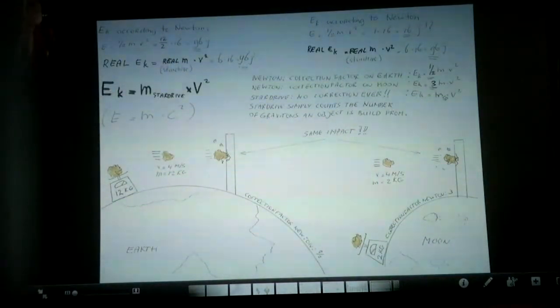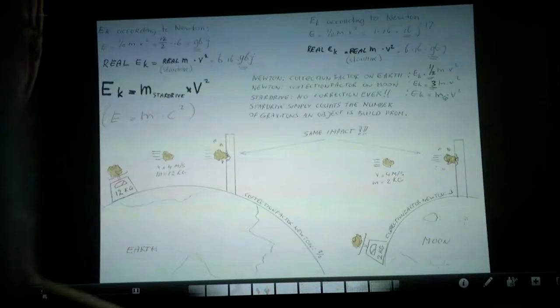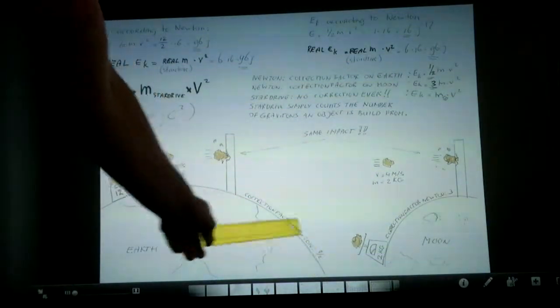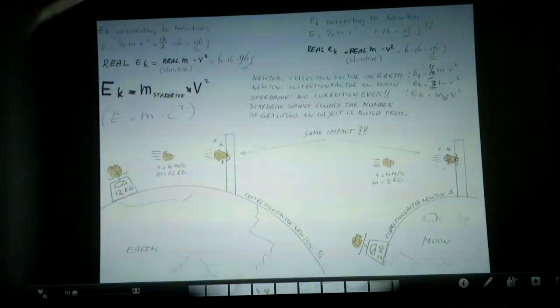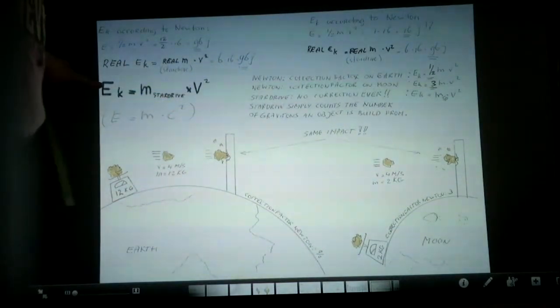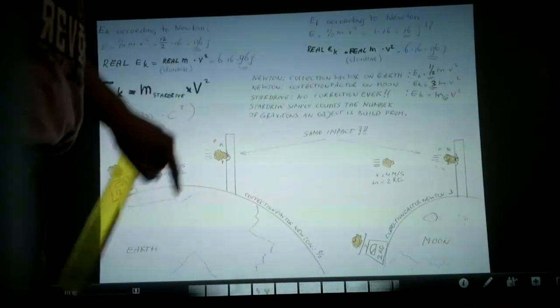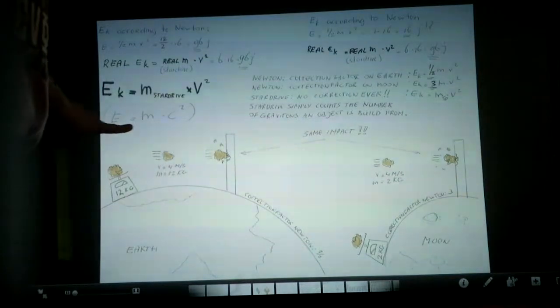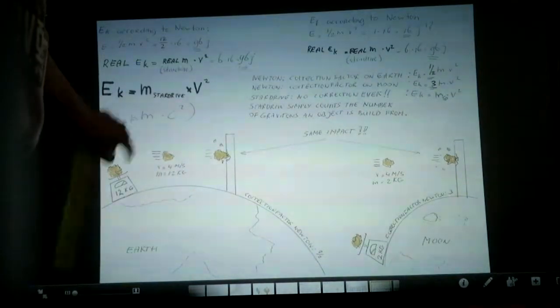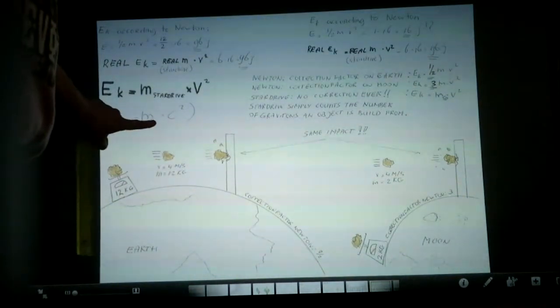So I'm sorry, you're wrong. You shouldn't use a correction vector on Earth of about a half. So E kinetic is a half times M, a half M multiplied by V squared. Wrong. This is the real formula. E kinetic is M star drive times V squared. And you can see Einstein used the right mass. Einstein was smarter. He used the right mass.